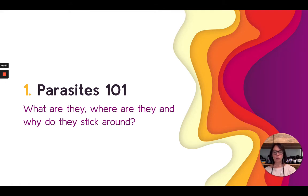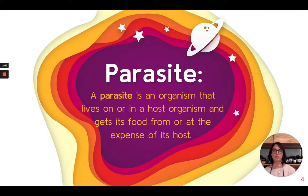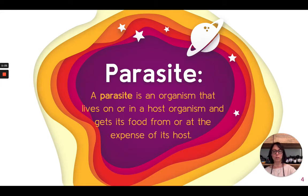We're going to start with 101. Parasites are something that often get ignored, missed, or forgotten about. We're going to define them, talk about where you find them in the body, and why they stick around and can be so difficult to get rid of. A parasite is any organism that lives on or in another organism and gets its food at the expense of that host. Any parasite — whether in our gut or in our blood — is going to deprive us of nutrients, which becomes really important when we look at the symptoms caused by intestinal parasites.